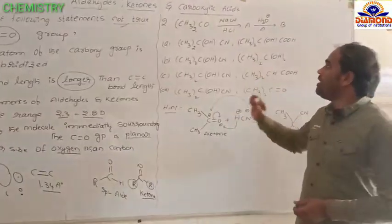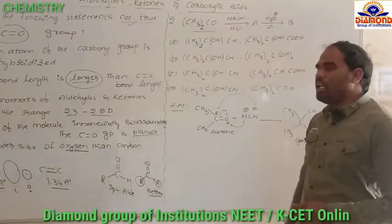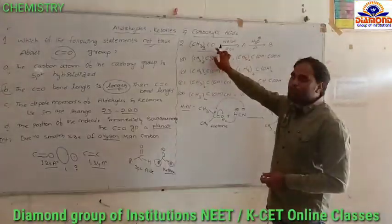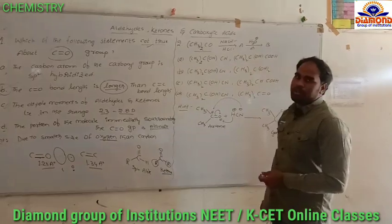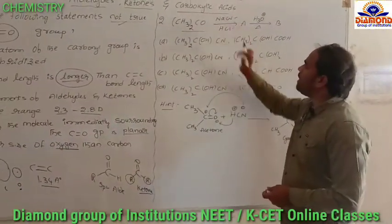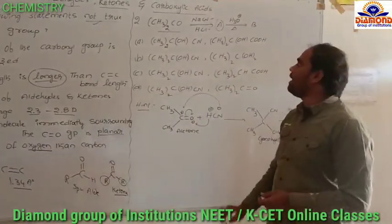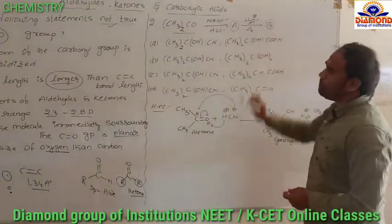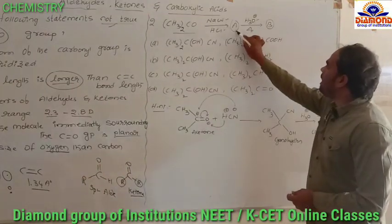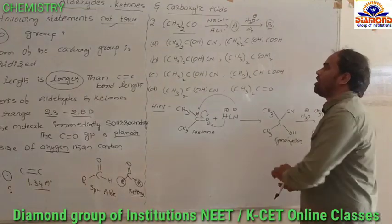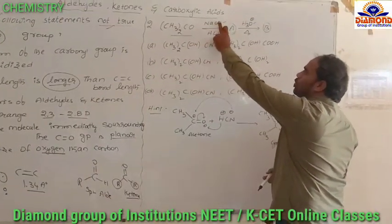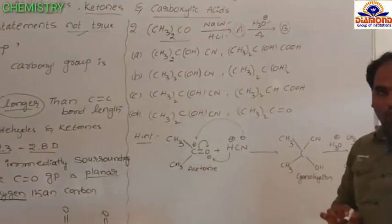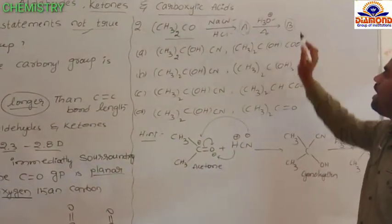Second question: this compound is acetone or 2-propanone, containing a ketone functional group. This compound reacts with sodium cyanide and HCl — first it forms A as an intermediate. That intermediate undergoes hydrolysis and produces B. So here, what are A and B? That is the question. Acetone reacts with sodium cyanide and HCl to produce A, and after formation of A, it undergoes hydrolysis and forms B.